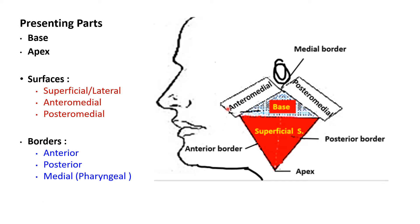There are also three borders. The anterior border separates the lateral or superficial surface from the anteromedial surface and is visible on the face. The posterior border separates the lateral surface from the posteromedial surface and is located on the sternocleidomastoid muscle. The medial or pharyngeal border separates the anteromedial surface from the posteromedial surface and comes in contact with the lateral wall of the pharynx. So in summary: three surfaces, three borders, one apex, and one base.